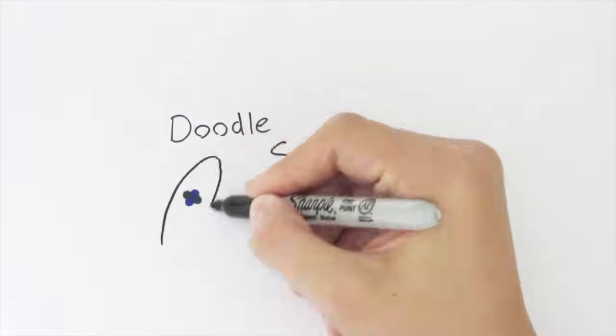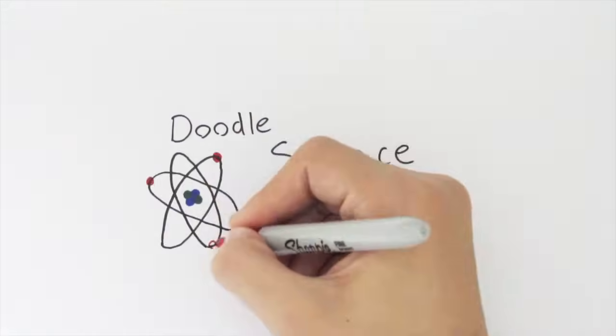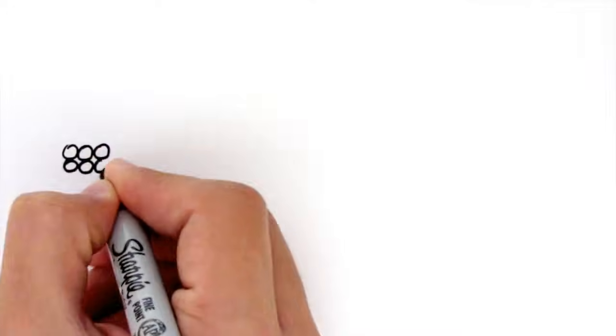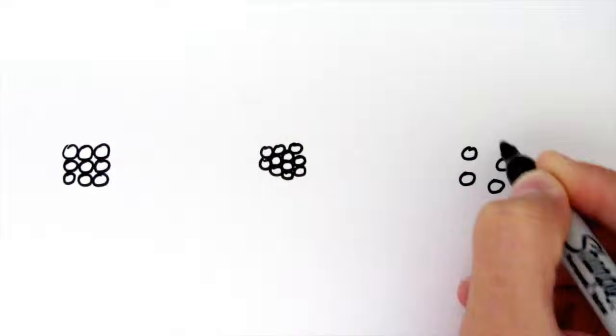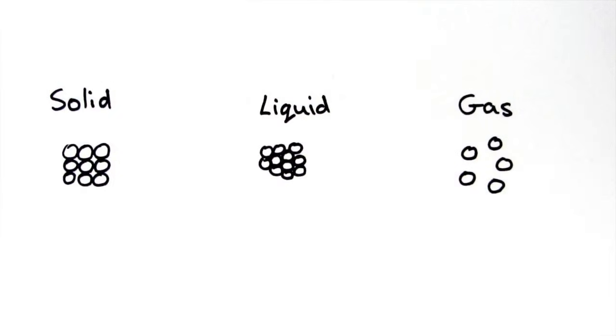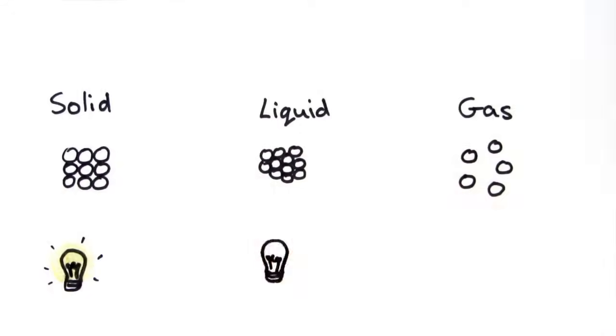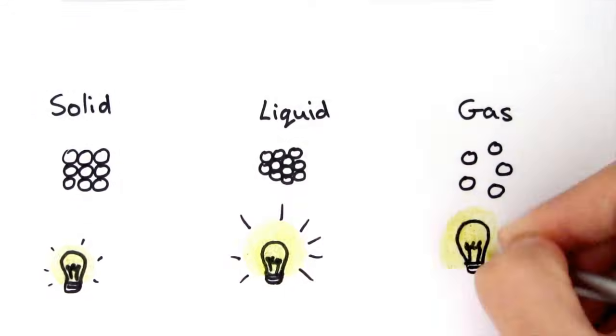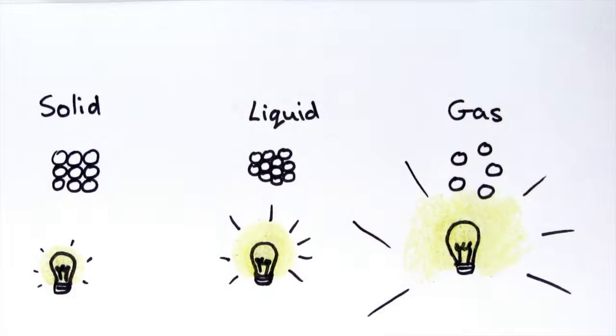The kinetic theory explains the properties of the different states of matter. All the particles in a solid, liquid and gas are the same — the only thing that changes is the amount of energy they have.